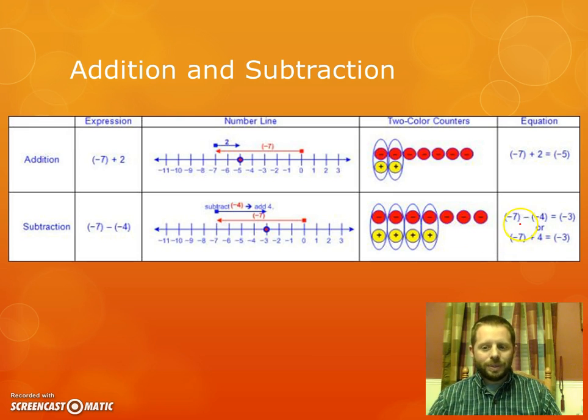So in equation form, negative 7 minus negative 4 equals negative 3. Or another way to think of this problem is when you have two negatives side by side like that, it really is the same thing as saying negative 7 plus 4 instead of negative 7 minus negative 4. And so you can see the result a little bit clearer is negative 3.